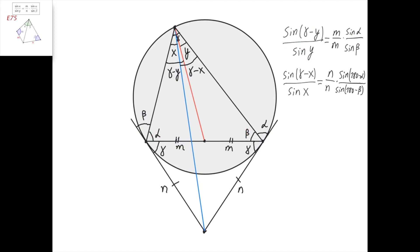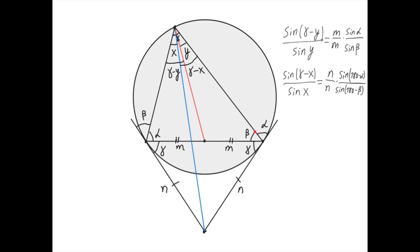Now let's apply the law of sines for this triangle and this triangle. We get that sin of (gamma minus x) divided by sin of x equals n divided by n, times sin of (180 minus alpha) divided by sin of (180 minus beta), since this angle is alpha making that angle 180 minus alpha, and this angle is beta making that angle 180 minus beta.